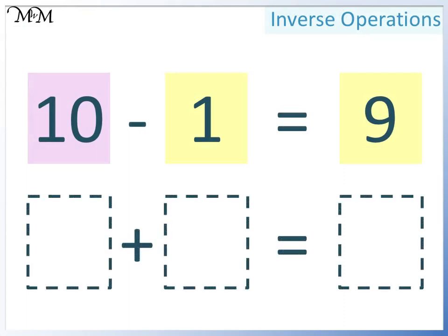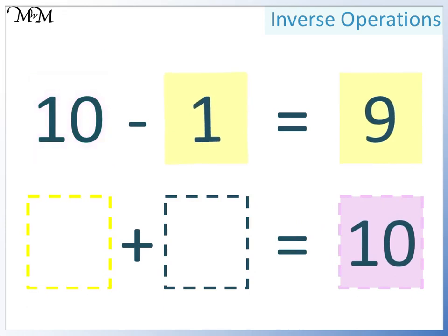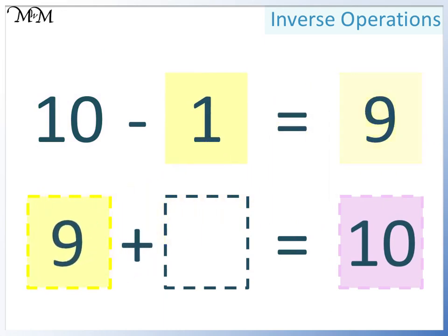Here is the second way that we could write this as an addition. Again, the largest number must go here. Either of the two smaller numbers can go here — this time we will write 9. Therefore, in this space we must write 1. 9 plus 1 equals 10.